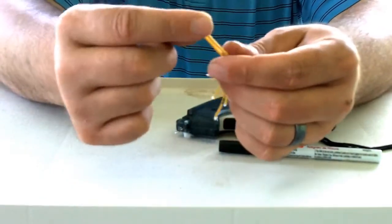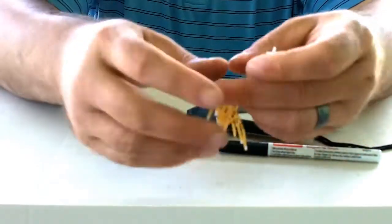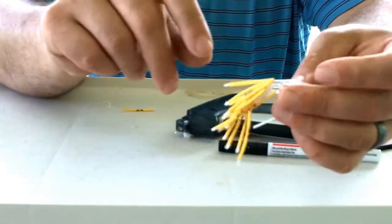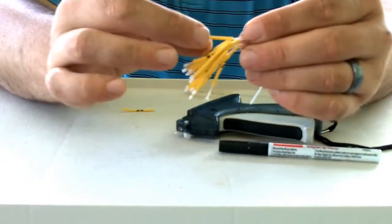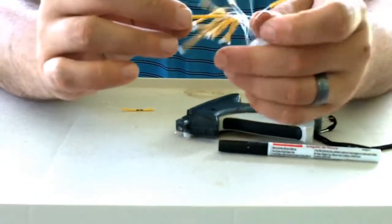And then once I get the whole set done, I'll take the hair dryer and I'll blast it until it shrinks down to where they all catch. Basically what that does is allows them to free flow on the tag.